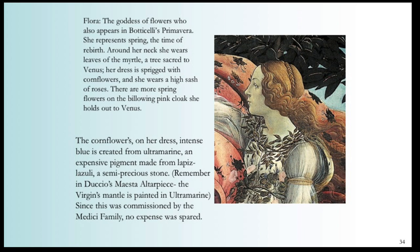Flora, the goddess of flowers, also appears in Botticelli's Primavera — she represents spring, the time of rebirth. Around her neck she wears leaves of the myrtle, a tree sacred to Venus. Her dress is sprinkled with cornflowers as she wears a high sash of roses. There are more spring flowers on the billowing pink cloak she holds out to Venus. The intense blue of the cornflowers on her dress is created from ultramarine, an expensive pigment made from lapis lazuli, a semi-precious stone. Since this was commissioned by the Medici family, no expense was spared.